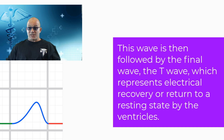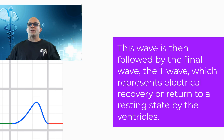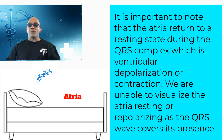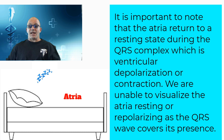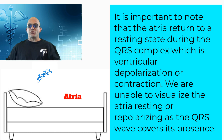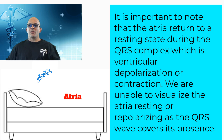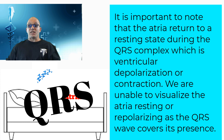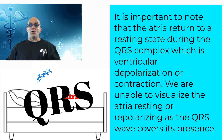The T wave represents electrical recovery or return to a resting state by the ventricles. It is important to note that the atria return to a resting state during the QRS complex, which is ventricular depolarization or contraction. We are unable to visualize the atria resting or repolarizing as the QRS wave covers its presence.